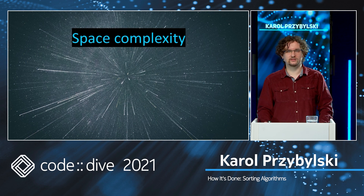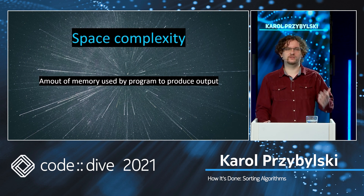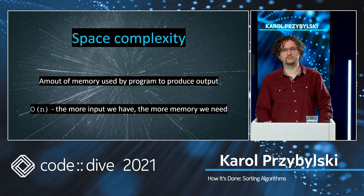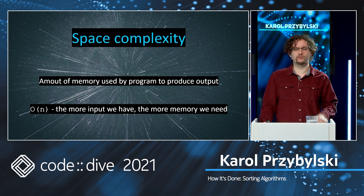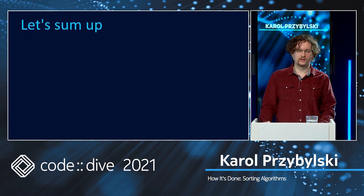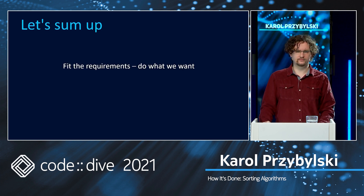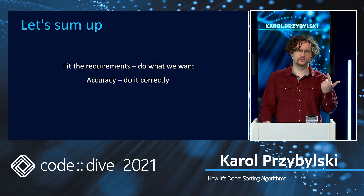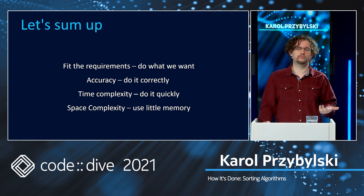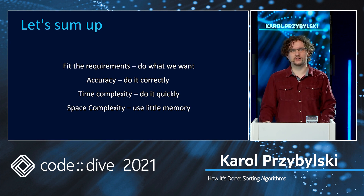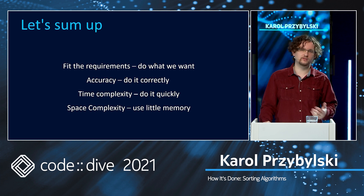Last but not least, we have space complexity. Basically it describes the amount of memory that our program is using, and it follows the same notation as time complexity. For example, linear space complexity means the more input we have, the more memory we need. To sum up quickly: we want our program to fit the requirements, we want it to be accurate, we want to have good time complexity, and we don't want to take up too much space. Space might be especially important if you are working with memory-constrained environments like embedded systems — sometimes it might be beneficial to choose better space complexity over time complexity.